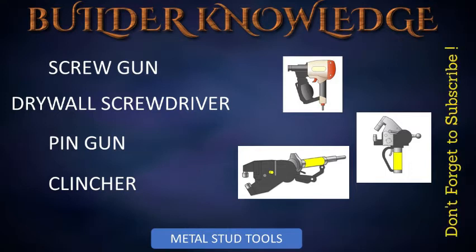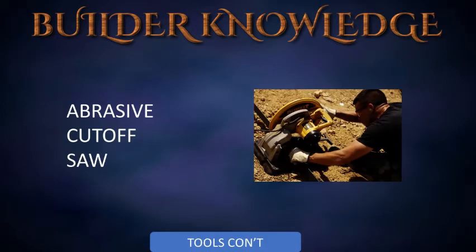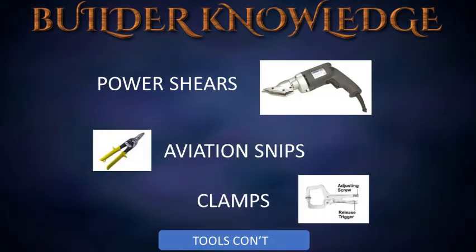A clincher is a pneumatic tool used for pressing one metal framing member into another. An abrasive cutoff saw is used to cut metal framing members. Power shears are used to cut metal components up to 68 mils thick. Aviation snips are used to cut metal components up to 43 mils thick. Clamps are used to hold metal framing members together while they are being fastened.